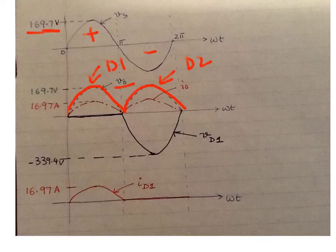For plotting the waveform for current, it's going to have the same shape as V_o because it's a pure resistive load. The only difference is the amplitudes are different: the amplitude for current is 16.97 amperes and the amplitude for voltage is 169.7 volts.